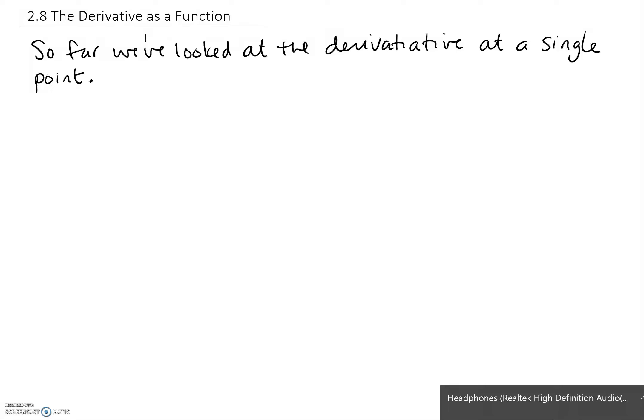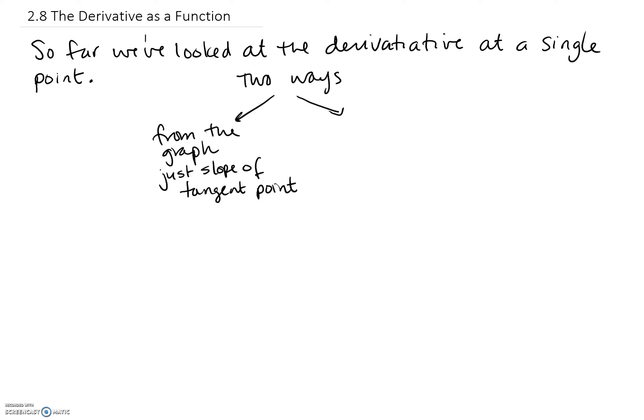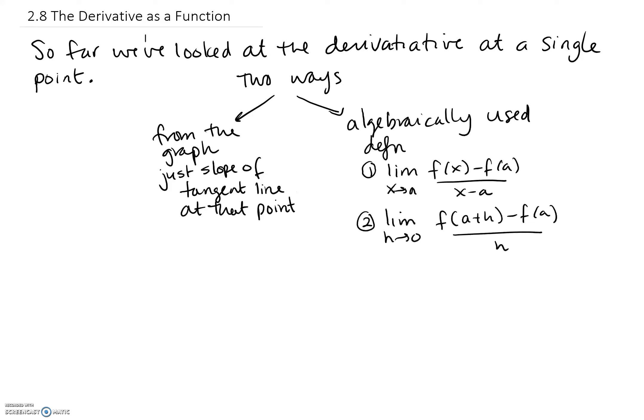So far we've looked at the derivative only at a single point, and we've looked at it two different ways. One of them was from the graph, which is just looking at the point and figuring out the slope of the tangent line at that point. We also looked at it algebraically, using the actual definition for that single point, which was either x approaching a, or the second definition where the distance between point a and the nearby point was getting smaller and smaller.